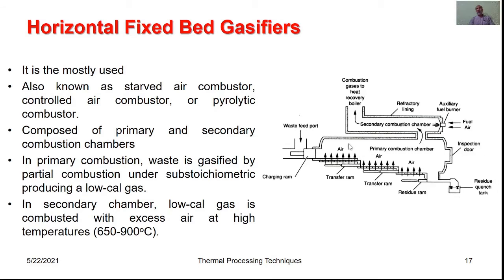The horizontal fixed bed gasifier essentially comprises two chambers: one is the primary combustion chamber and the secondary combustion chamber. This primary combustion chamber gasifies the waste at a substoichiometric level so as to produce low-calorie gas. The second chamber assists in having this low-calorie gas combusted with excess air to generate heat, which in turn is used through boilers in order to generate electricity.